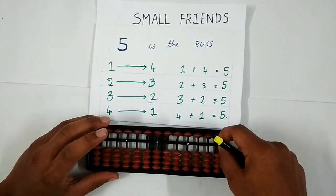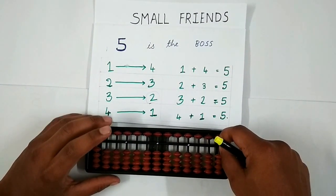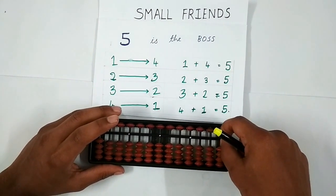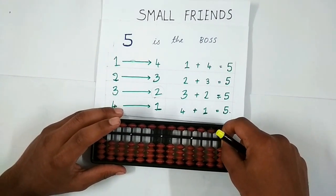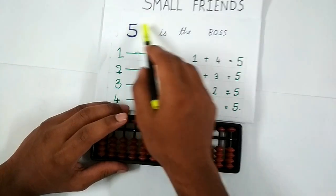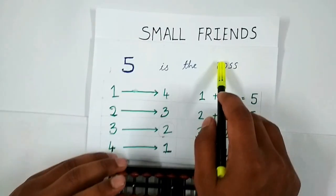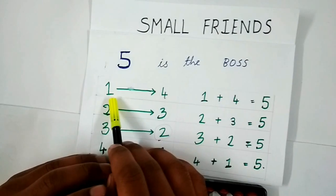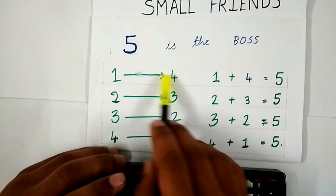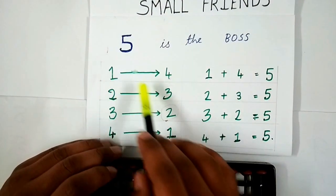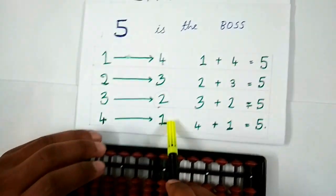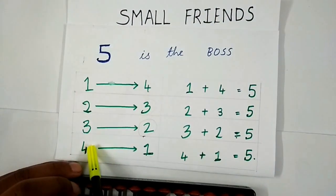Small friend subtraction is easy and the concepts include the same as in the additions concept. Here again, 5 is the boss and the friends include the same: 4 is the friend of 1, 3 is friend of 2, 2 is friend of 3, and 1 is friend of 4.